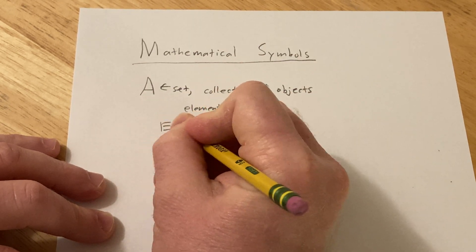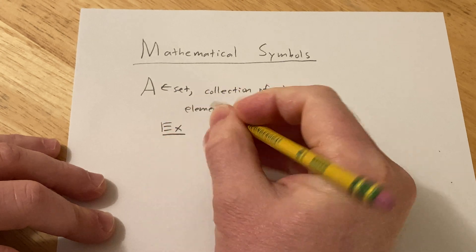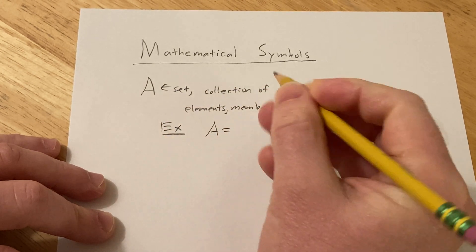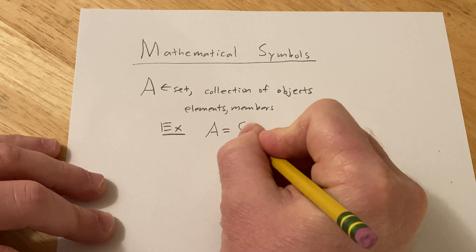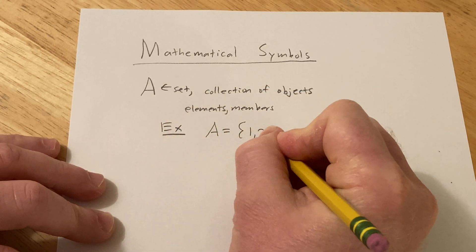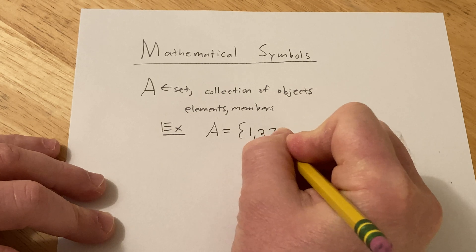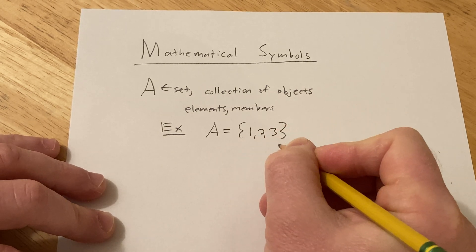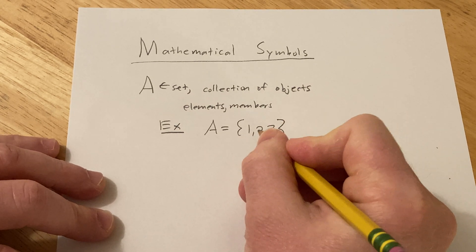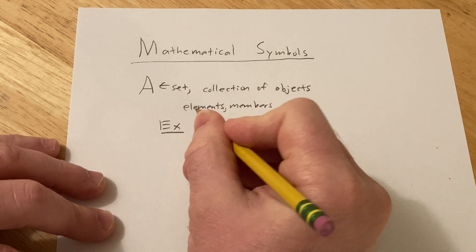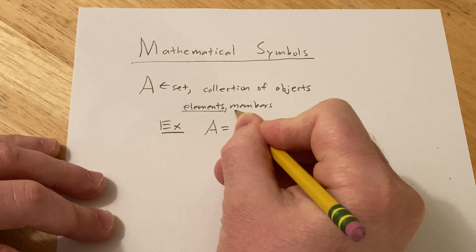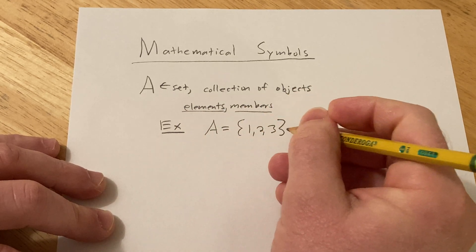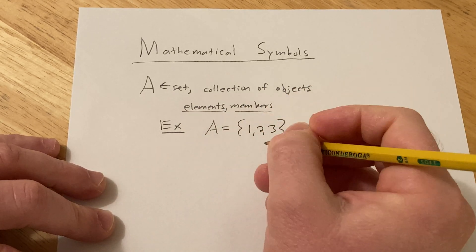Let's do a simple example. Say we have the set containing numbers: 1, 2, 3. This is a set and it contains three numbers, or three elements, or three members — all the same thing.